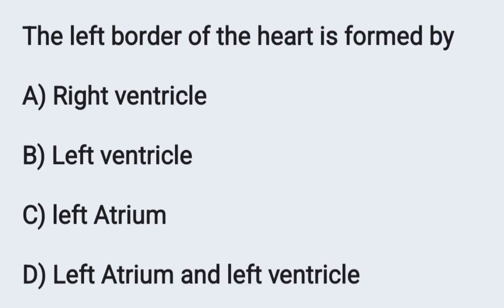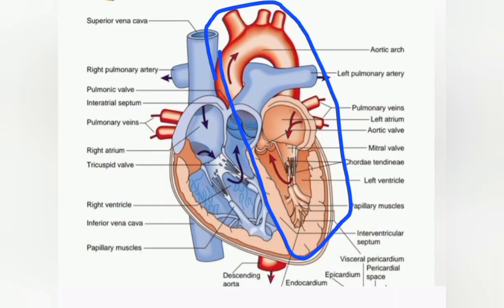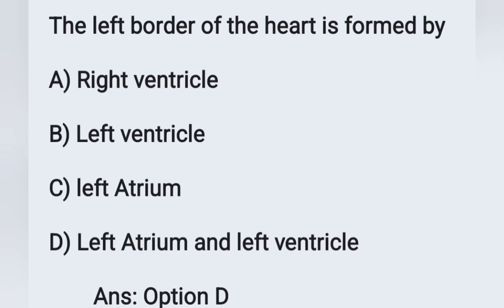Next question: the left border of the heart is formed by which structures? Options: (a) right ventricle, (b) left ventricle, (c) left atrium, (d) left atrium and left ventricle. The left border means the whole left side of the heart, which is formed by the left atrium and left ventricle. Correct answer is option D.